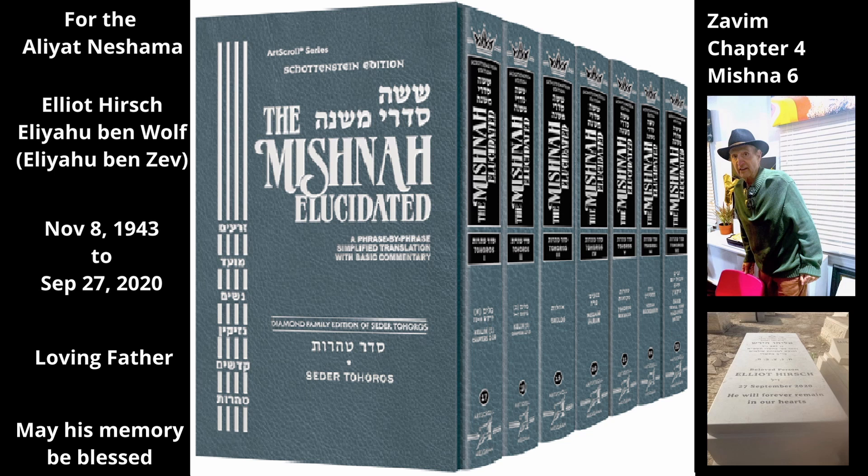But regarding a corpse — i.e. if a corpse is on either side of the scale — everything is Tahor. No matter what kind of item is on the other side of the scale, whether a bed, a seat, any other utensil, or food or drink, it remains Tahor, unless the item on the other side of the scale is a person. That is, if a corpse was on one side of a scale and a person was on the other side and the person rests and weighs down his side, the person will become Tameh.